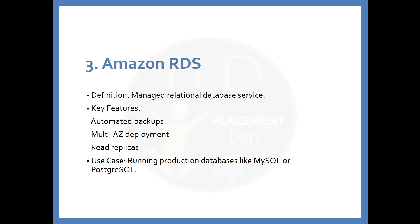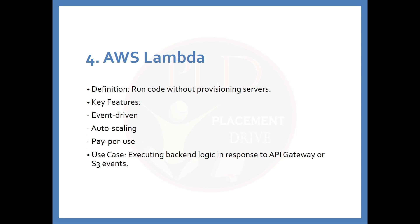The third service is Amazon RDS. The definition is: this is a managed relational database service. Key features include automated backups, multi-availability zone deployment, and read replicas. The use case is running a production database like MySQL or PostgreSQL. The fourth service is AWS Lambda. The definition is: you can run code without provisioning servers. Key features include event-driven execution, auto scaling, and pay-per-use. The use case is executing back-end logic in response to API Gateway or S3 events.